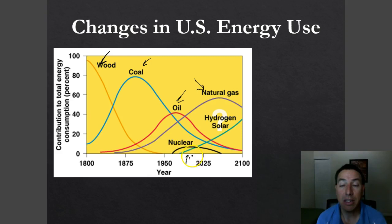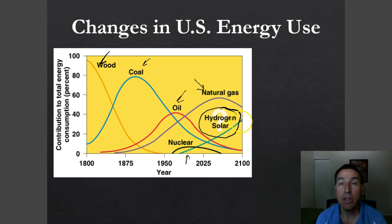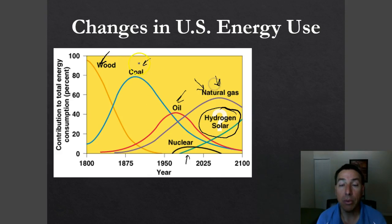Natural gas has come to the forefront in the United States as one of our biggest providers, due to our large stores of natural gas. Nuclear had a nice spike in the 1960s and 1970s, however it is predicted to level off. Then we have this big question mark — the hydrogen-solar revolution — which is basically using solar energy to create hydrogen gas and then using that hydrogen gas as our fuel source. Hydrogen gas is flammable and we can burn it in engines to create power.